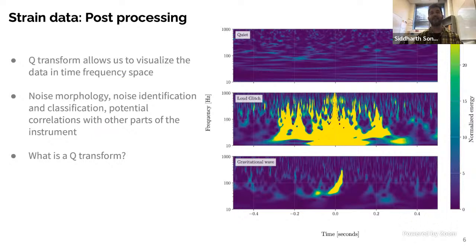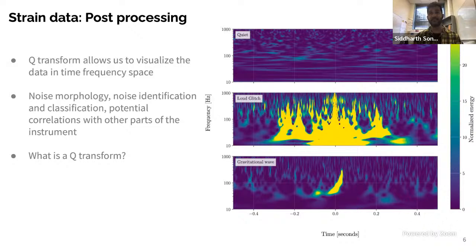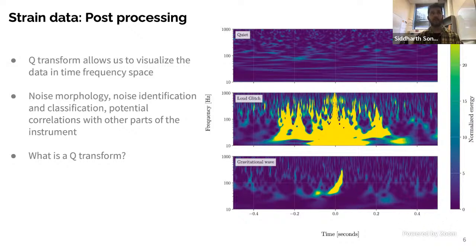After whitening and bandpassing, we do something really dramatic — we Q-transform the data. Q-transform essentially allows us to visualize this data in time-frequency space. As you can see, we can now clearly see the differences in the three plots: quiet data, a rather loud glitch with lots of saturation in yellow, and finally the gravitational wave. Q-transform is really useful because it helps us understand the noise morphology — how noise looks in the time-frequency plane — and helps with noise identification and classification.